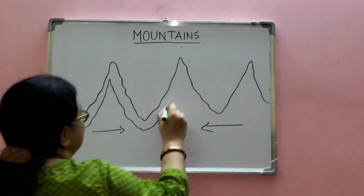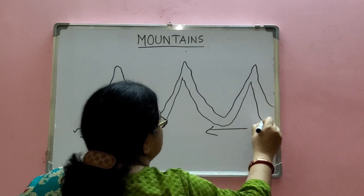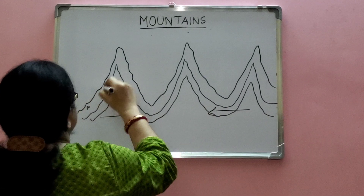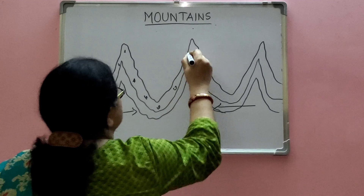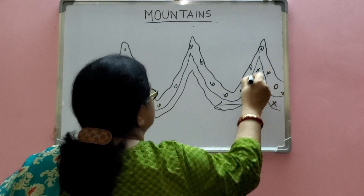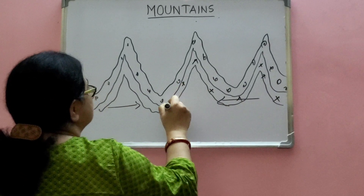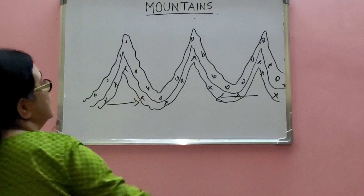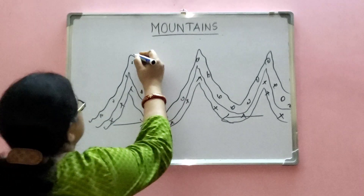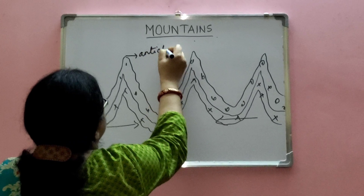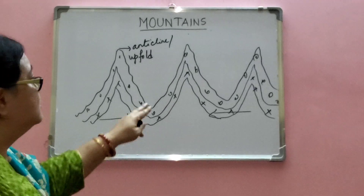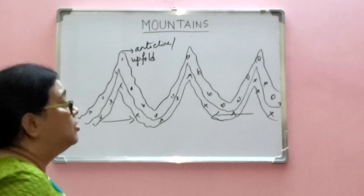Fold mountains are arranged in layers, and each successive layer is characterized by a different set of sediments. The top part of a fold mountain is known as an anticline or upfold, and the lower part of the fold mountain is known as a syncline or downfold.